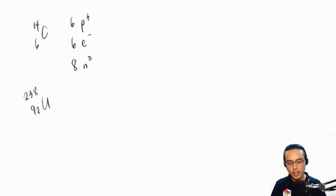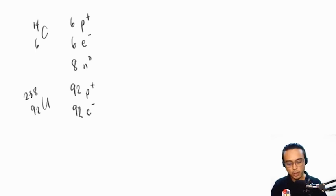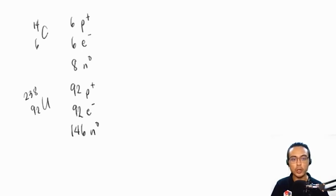For uranium-238, the atomic number is 92, meaning it has 92 protons and 92 electrons. For the number of neutrons, we subtract 92 from 238, giving us 146 neutrons. Always remember this process for obtaining the number of protons, neutrons, and electrons of a given atom.